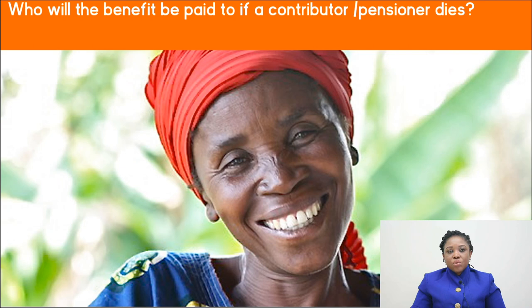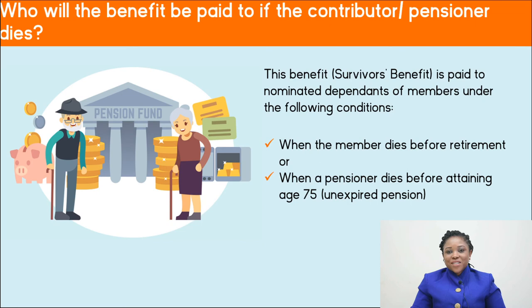Who will benefits be paid to if a contributor or pensioner dies? This benefit, also known as survivor's benefit, is paid to nominated dependents under the following conditions: when a member dies before retirement, his or her benefits are paid to nominated beneficiaries; and when a pensioner dies before attaining the age of 75, the unexpired pension is paid to nominated dependents.